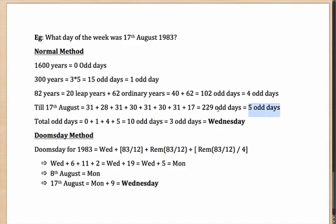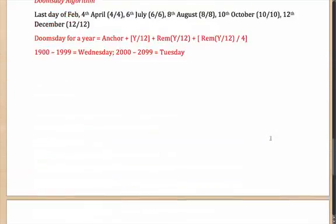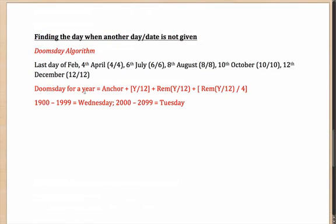So 10 odd days total equals 3 odd days, which is a Wednesday — and that is correct, the speaker was born on a Wednesday. Now let's see if the Doomsday algorithm makes this simpler.